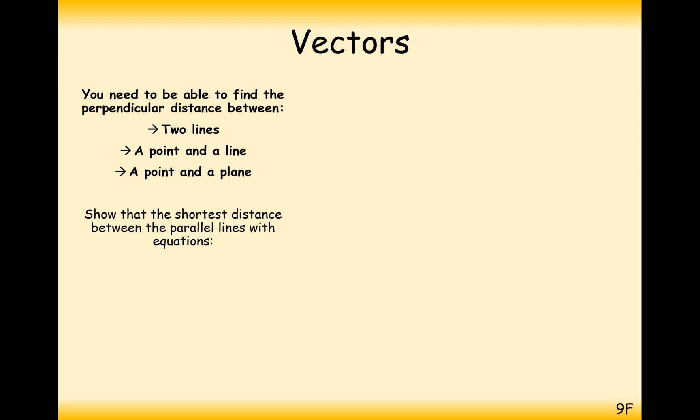This is part 2 of this series of videos. So we're going to look to show the shortest distance between these two parallel lines here. How can we tell they're parallel? We can tell that from the direction vector - they're exactly the same or a scalar multiple of another. So we can tell these are parallel, and we need to show that this distance here is 21 root 2 over 10.